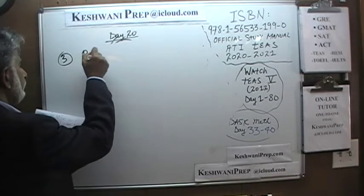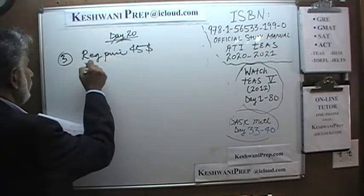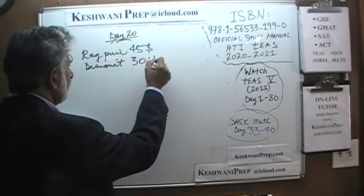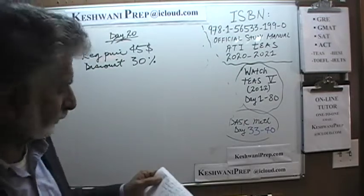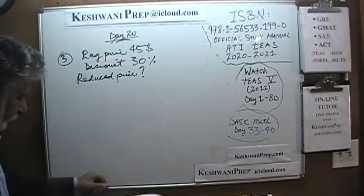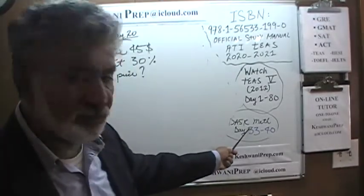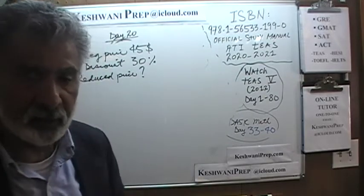Number 3 says: the regular price of something was $45, and it is right now being discounted at 30% off. The question is: what is the reduced price? I always point out where you can get more practice — such as the basic math series and the old TEAS 5 series — because in my opinion you cannot get proficient at a concept just by doing 3 or 5 problems. You have to do a few more before you can build some confidence, even if you are going to use a calculator. A calculator is just a machine; you still have to understand the concept.